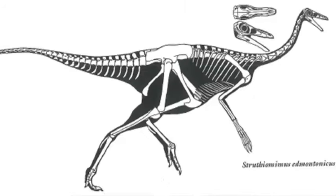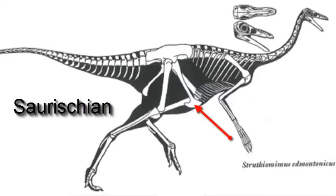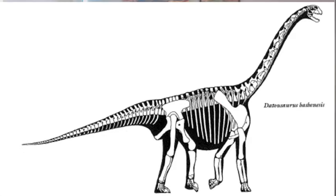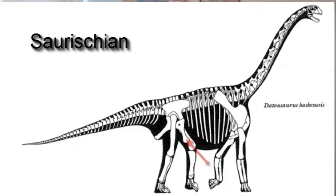What do you think this dinosaur is — an Ornithischian or a Saurishian? It is a Saurishian. What about this one — an Ornithischian or a Saurishian? It is a Saurishian. You can see the stubby pubis projects forward.